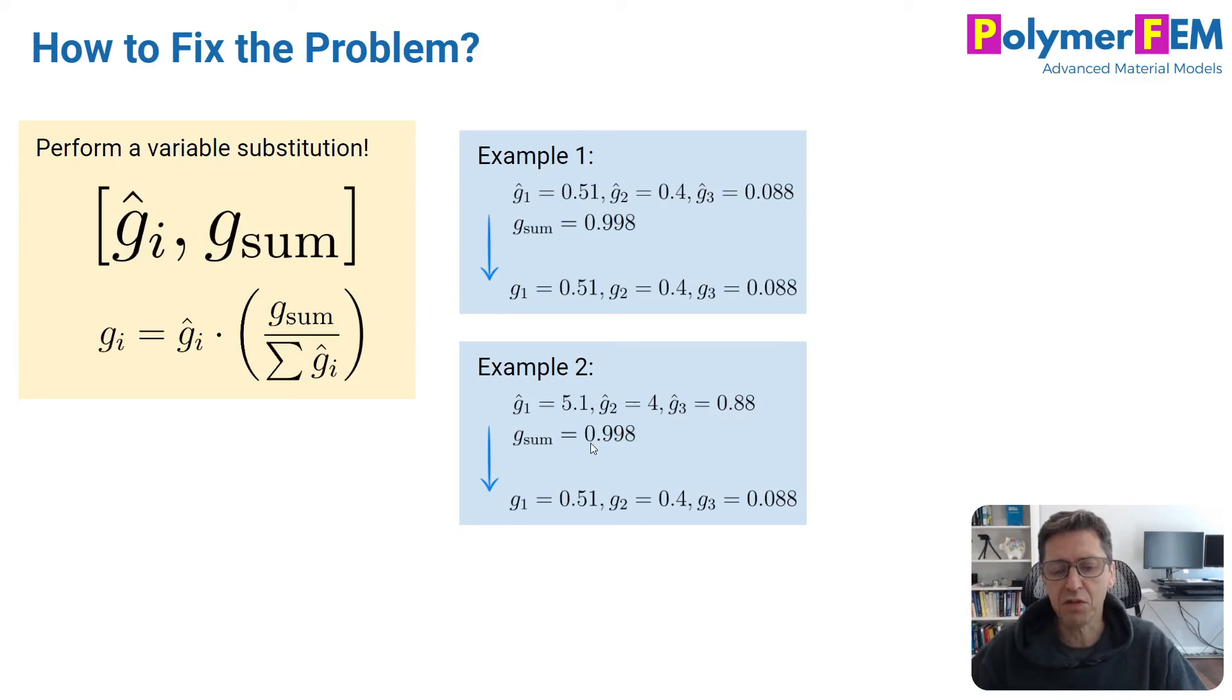So this makes this much more convenient. Of course, with this definition, we now have a situation that we can't expect the parameters to be unique, because there are many solutions here, like example 1 and example 2. They give you the same Prony parameters, even having different parameters within MCalibration. That's not a problem.